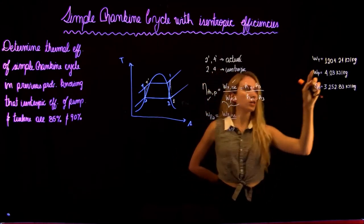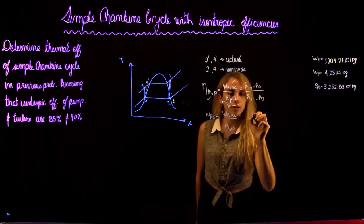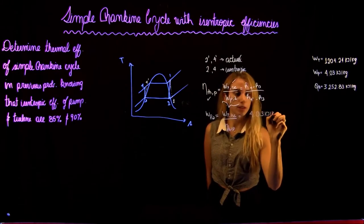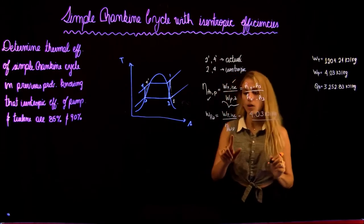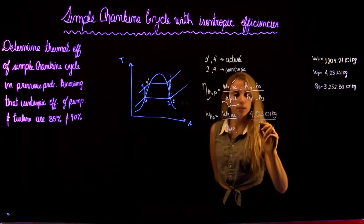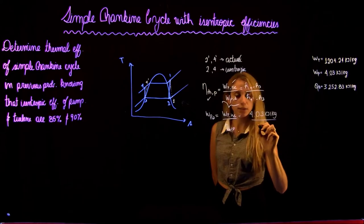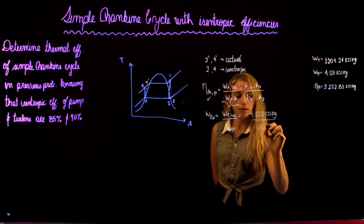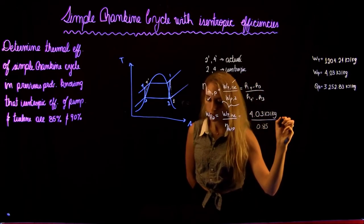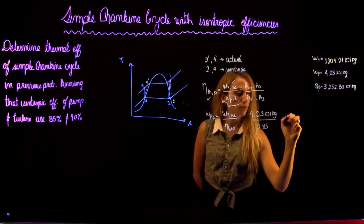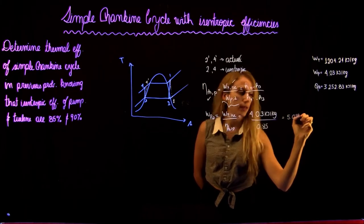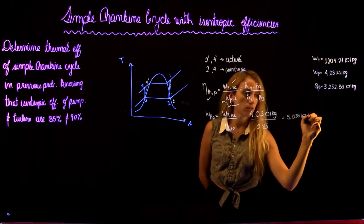The work of the pump found previously is 4.03 kJ/kg, divided by the isentropic efficiency of the pump, which is 85% or 0.85. This gives an actual pump work equal to 5.038 kJ/kg.